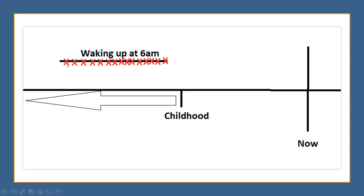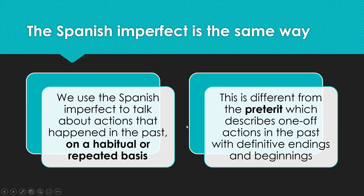Let's try to visualize this with a verb timeline, which helps illustrate what verbs are trying to describe in sentences. When I was a kid — everything before this line is childhood — I used to wake up at 6 a.m. So at 6 a.m. I would wake up this day, and this day, and this day, basically every day while I was a kid. So it's a repeated action in the past.